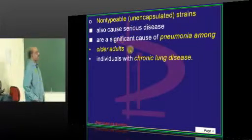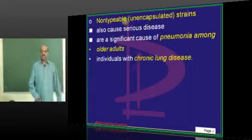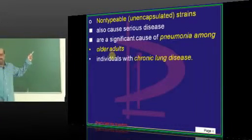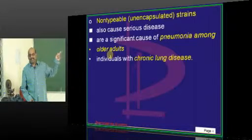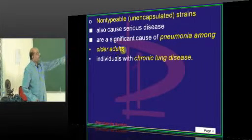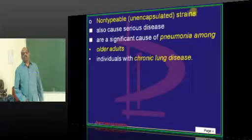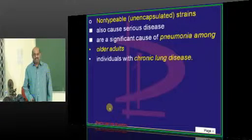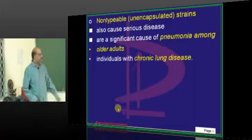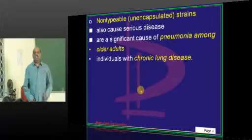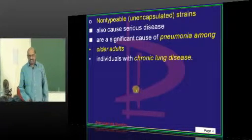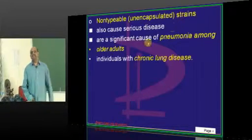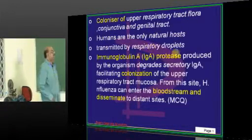Do we need to worry about non-typable strains? Yes. In a geriatric clinic, pneumonia in older adults can be caused by non-typable strains of H. influenzae — very dangerous infections. Similarly, in patients with COPD or chronic lung disease, we also need to remember non-typable unencapsulated strains of H. influenzae.